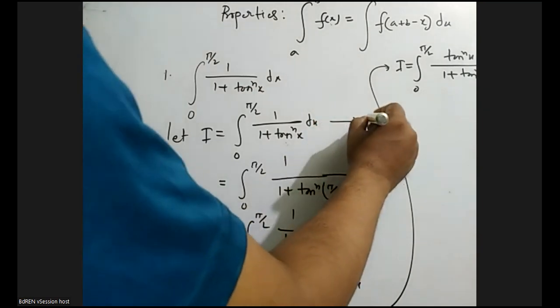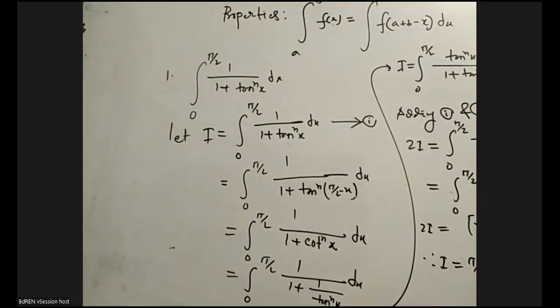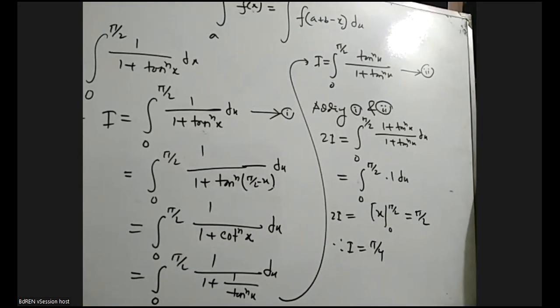This is equation 1 and the transformed form is equation 2. Adding equation 1 and 2, we get the integral from 0 to π/2 of (1 plus tan to the power n of x) divided by (1 plus tan to the power n of x) dx, which equals the integral of 1 dx from 0 to π/2, giving π/2. Hence i equals π/4. This is our required result.